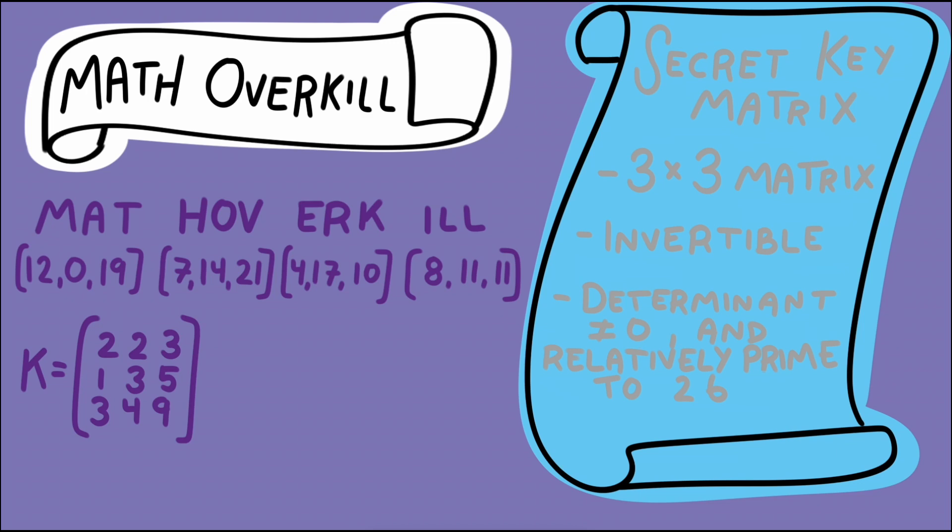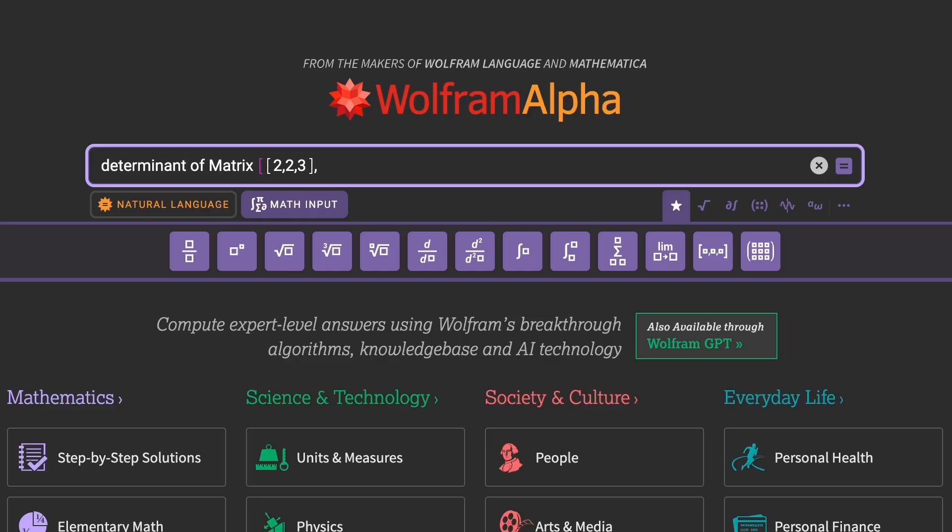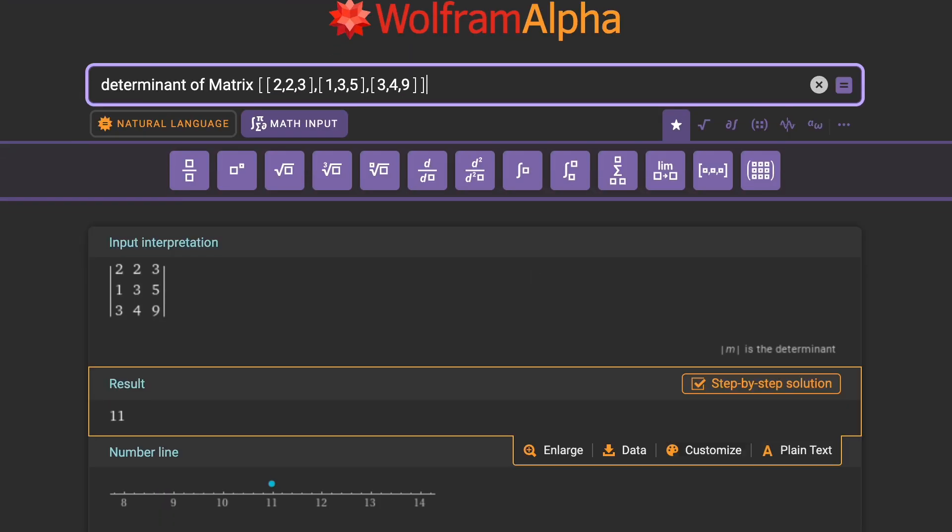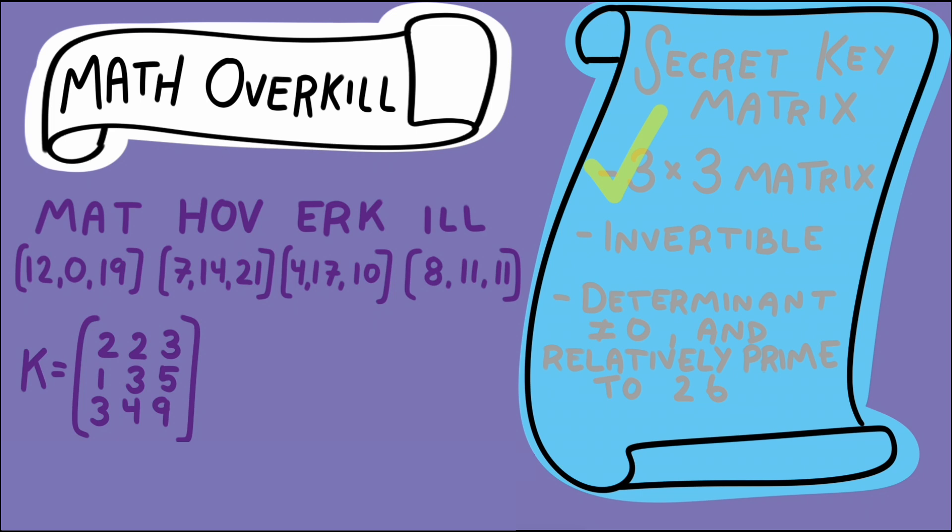Checking that this matrix satisfies the requirements to be used as a key, we want to check first that it's a square matrix with dimensions that match the length of the blocks we're encrypting. Check. Second that it's invertible. We can check this by finding the determinant and we see that the determinant is 11 which is indeed non-zero so our matrix is invertible. Third, 11 does not have 2 or 13 as factors so that condition is met.